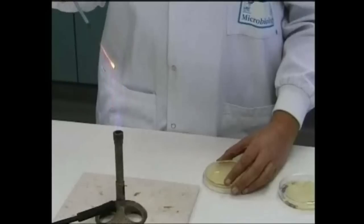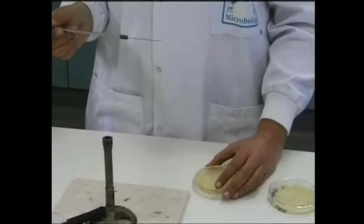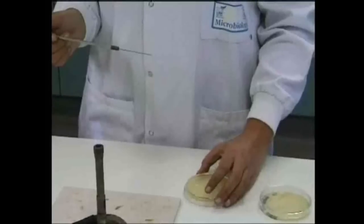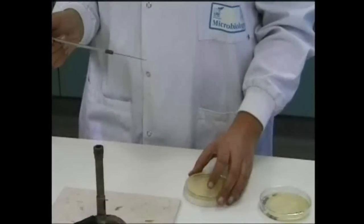After flaming the loop yet again, the final streak is taken by drawing from the third streak to the centre of the plate. The loop is then flamed once more.